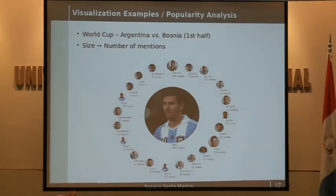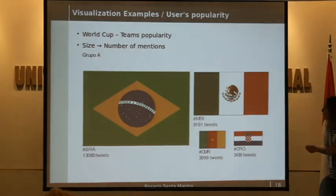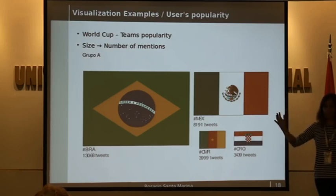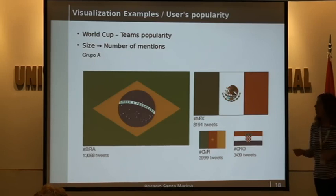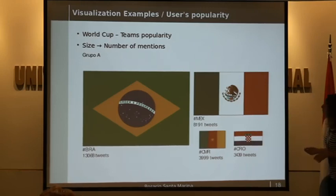The size of the different images represents the number of mentions of each player. In this case, the same information is represented in a slightly different way, because to do this analysis, we counted all the tweets made during the first stage of the World Cup. This is made for each group, and we also have another visualization for the total teams of the World Cup.